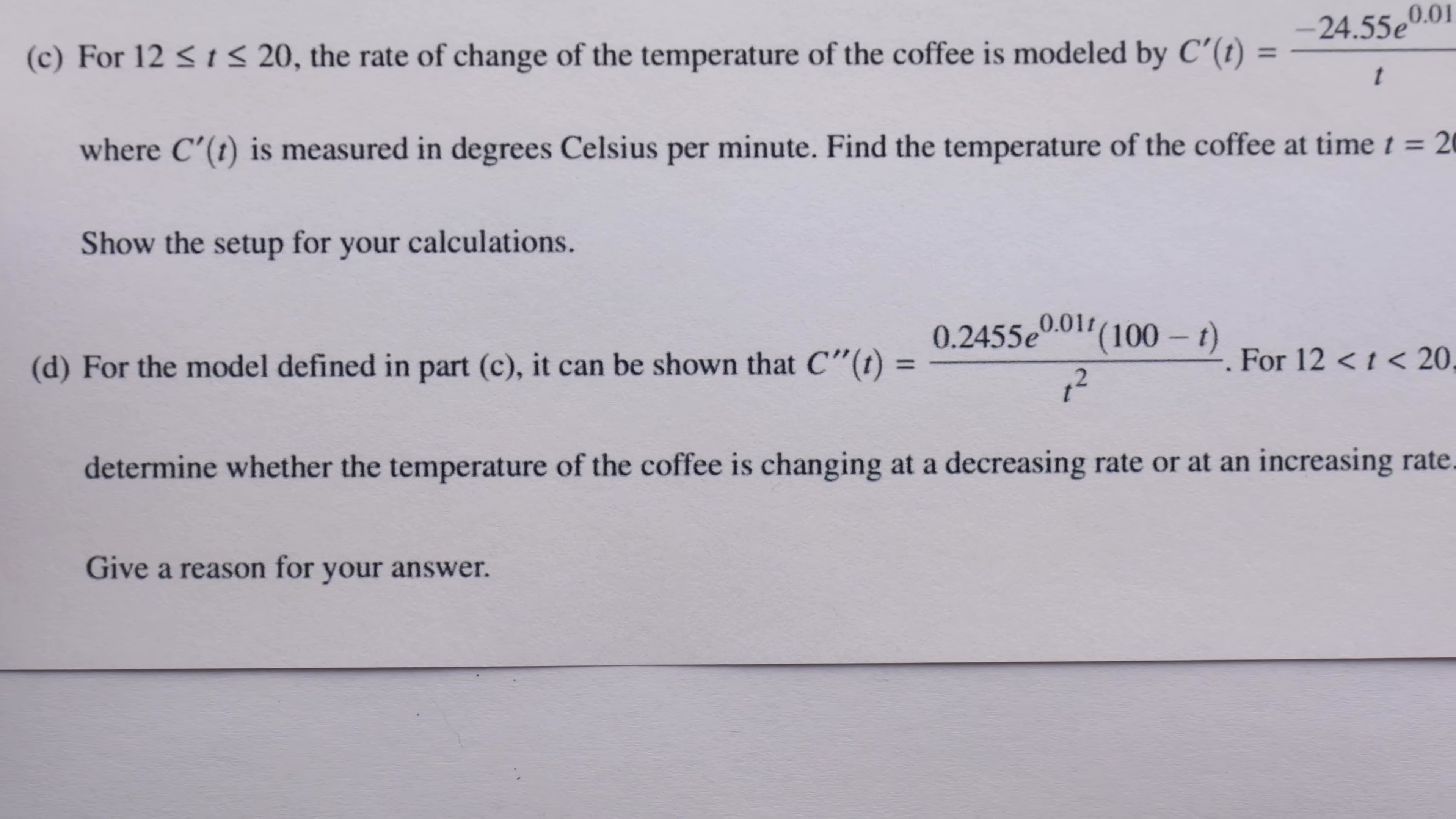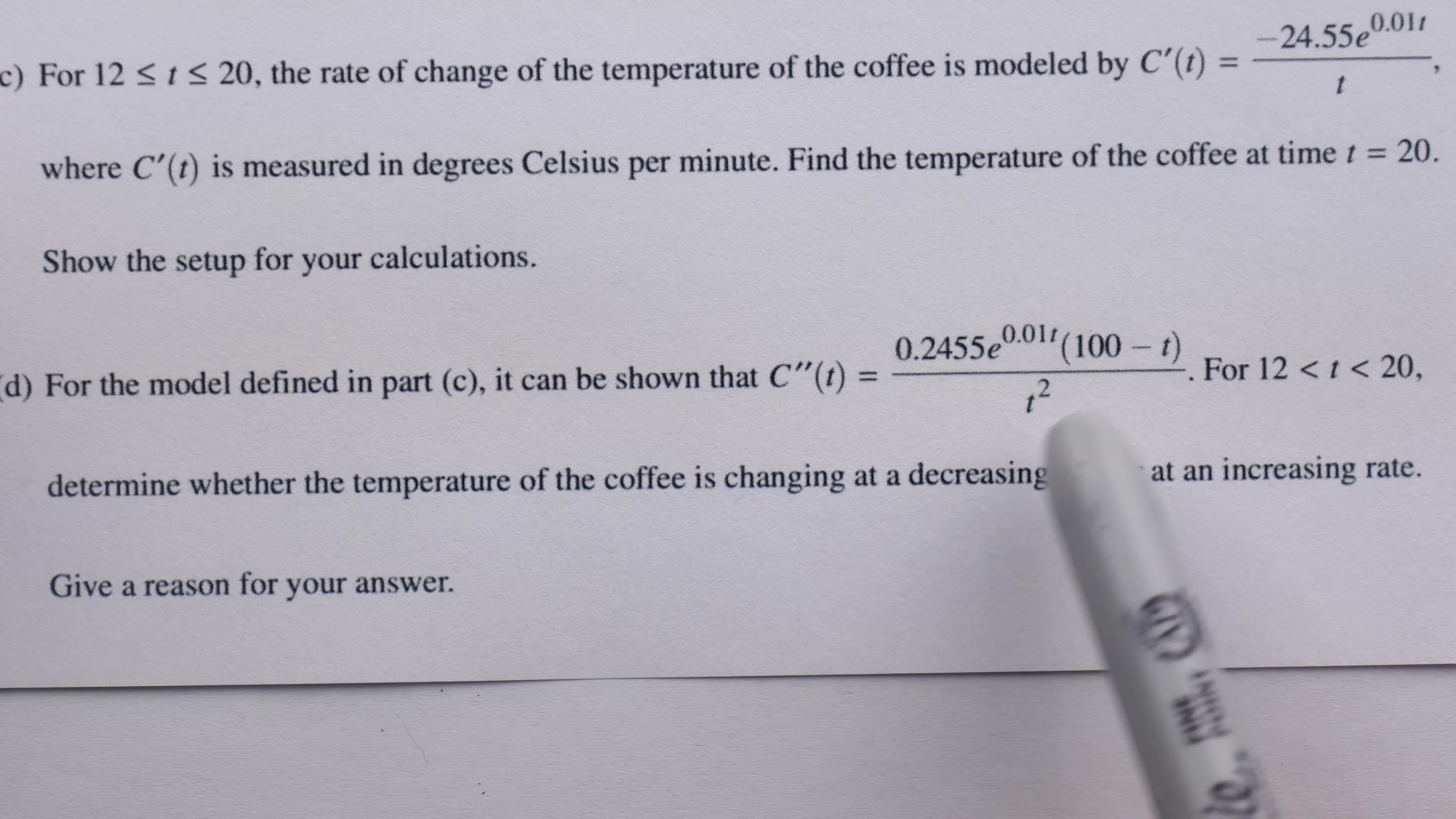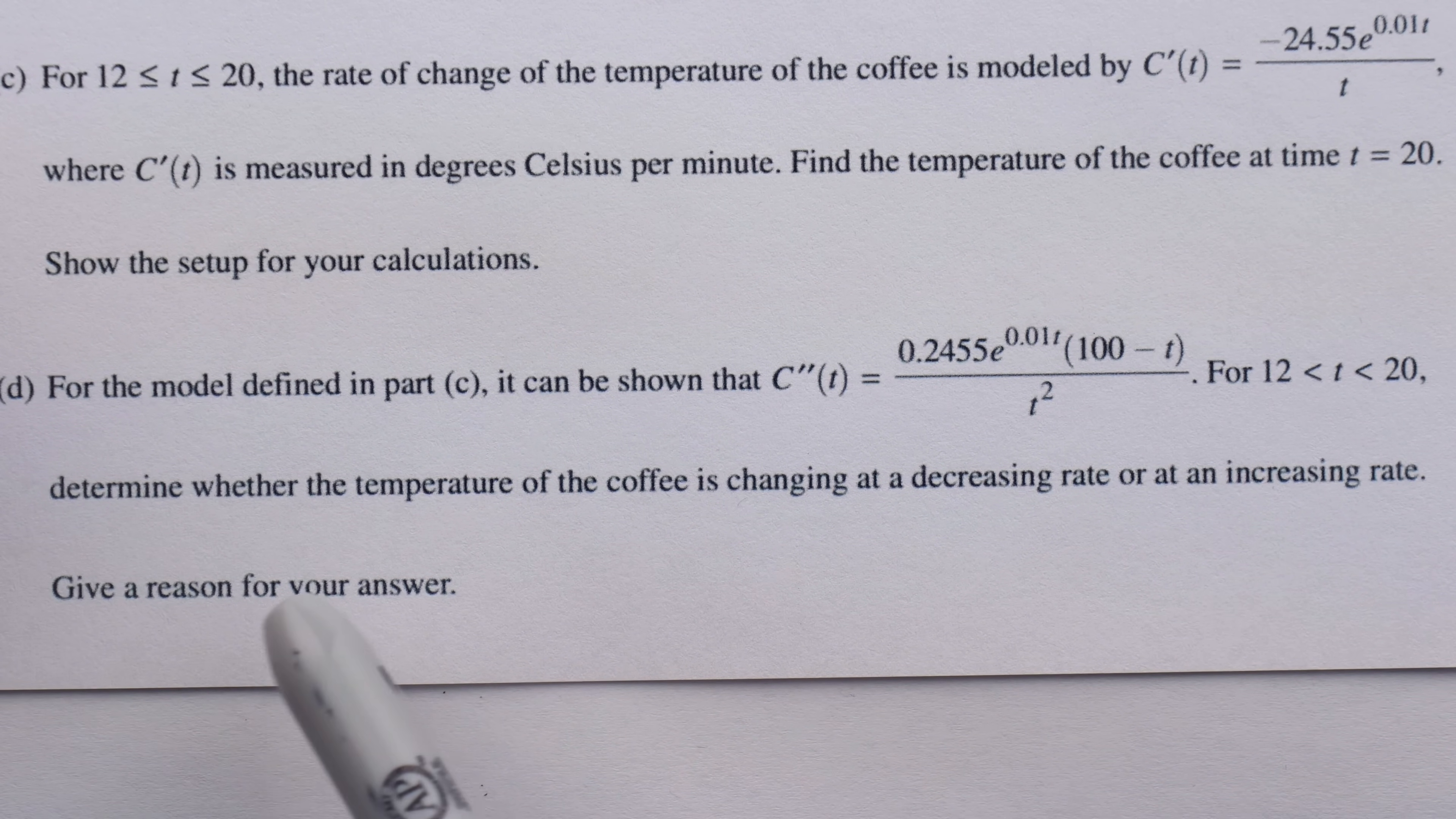But in Part D, we are given a second derivative. It says for the model defined in Part C, that is this derivative which was given, it can be shown that the second derivative, the derivative of the derivative, is equal to this for T between 12 and 20. We're then asked to determine whether the temperature of the coffee is changing at a decreasing rate or at an increasing rate, and to give a reason for our answer.